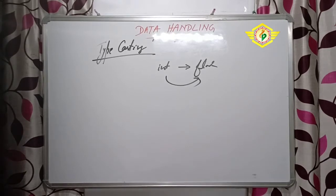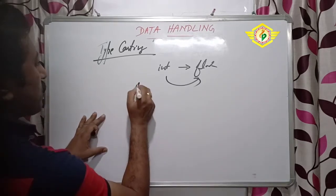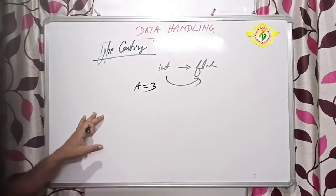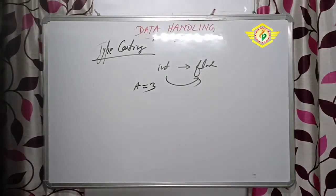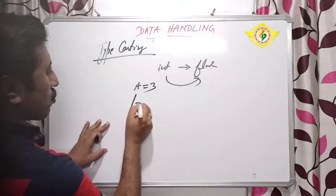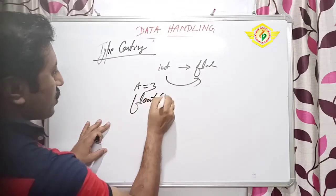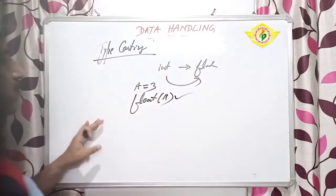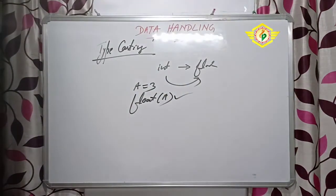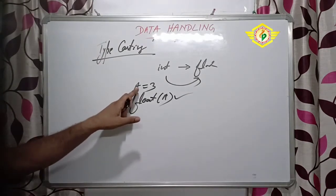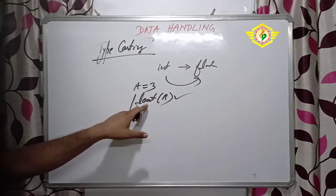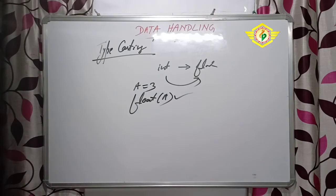I am showing one example. Suppose one value is in integer form - A equal to 3 is given. That means 3 is an integer type and A is also an integer type of value. If I want to convert to the floating type, I can write float within bracket A. This is called type casting or explicit type of conversion. A was integer and now it is converted to floating type.